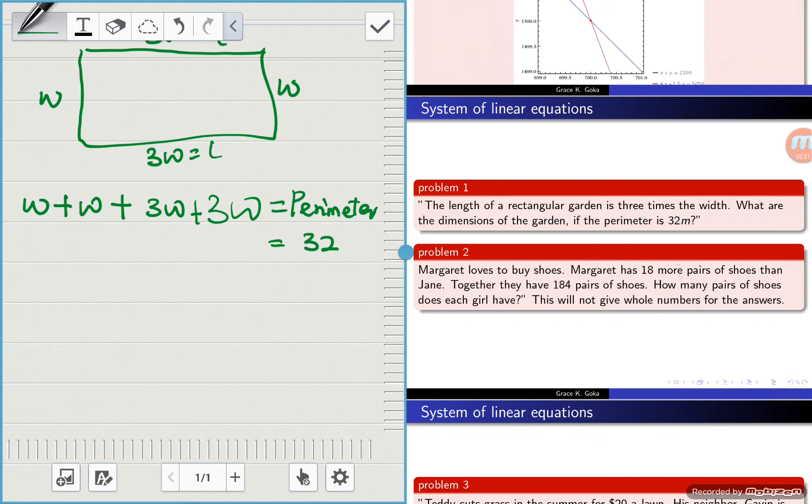So it's time to sum up. We have W plus W plus 3W plus 3W, which will give us 8W, and this is equal to 32.